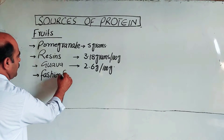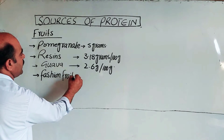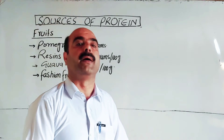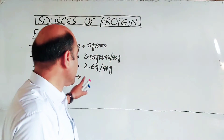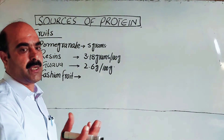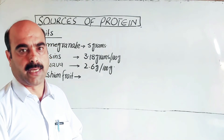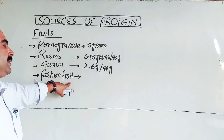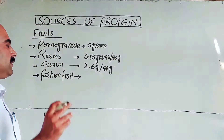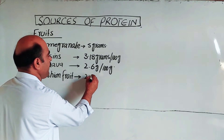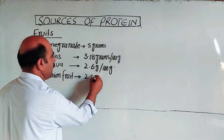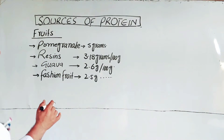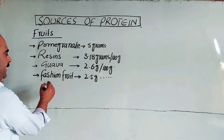Then passion fruit, which is a facial fruit. Passion fruit contains 2.5 grams of protein per 100 grams.